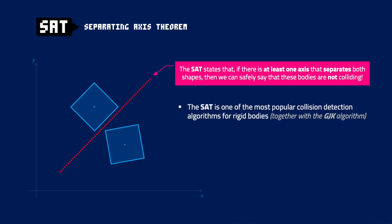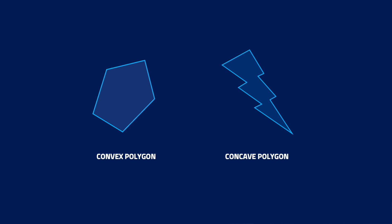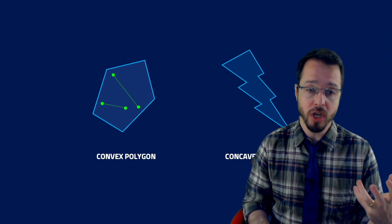Something super important: the SAT will only work for convex polygons. I think it's time to quickly explain what I mean by that. If we pick any polygon, it can be convex or concave. If we pick any two points inside a convex polygon, the line that connects those two points will always be contained completely inside the polygon. If this is always true, we are talking about a convex polygon.